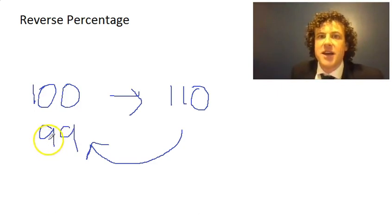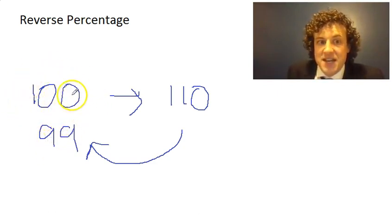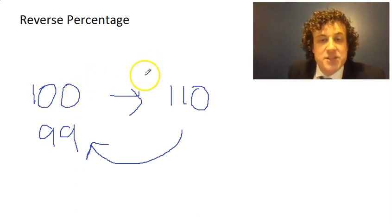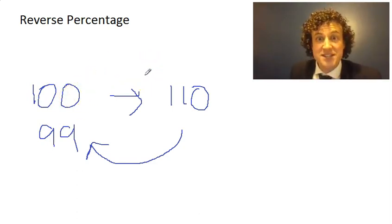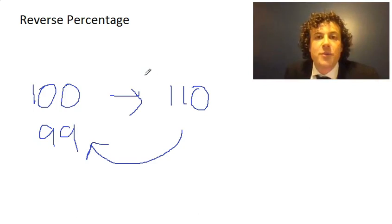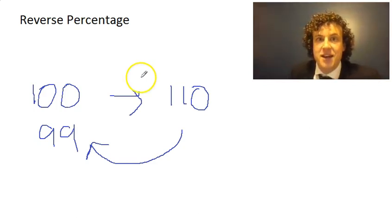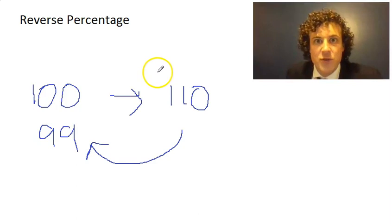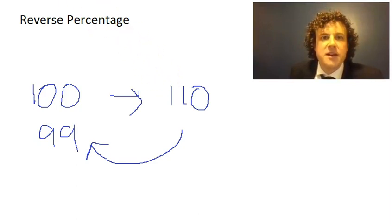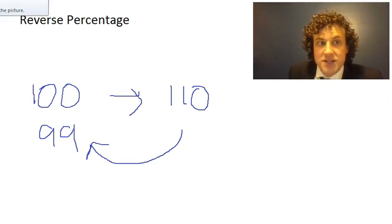So if I try to come back by doing a decrease of 10%, I'm not going to take off 10 - I'm going to take off 11, because that's 10% of 110. I get 99, which isn't what we started with. Equally, if I reduce 100 by 10% I get 90, and when I do the increase it's 10% of a smaller amount, so it goes back to 99. Whichever way you do it, it just doesn't work.